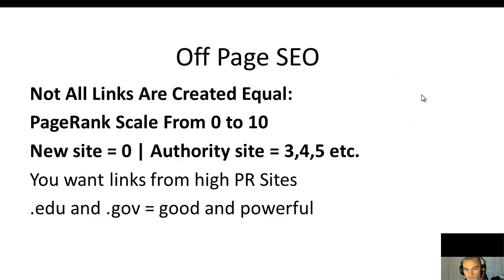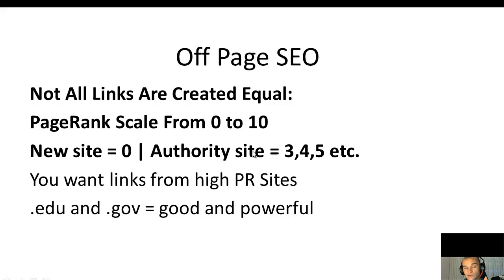Not all links are created equal. Google has a PageRank scale from 0 to 10. Every new site, when you register your domain name like yourname.com, will start at PageRank 0. Then you have authority sites — for instance, Facebook has a PageRank of 9, YouTube 9, Google 9. Those are the highest PageRank sites.